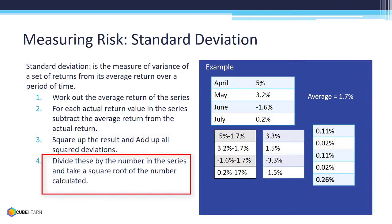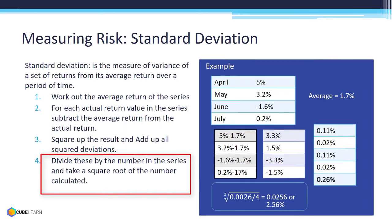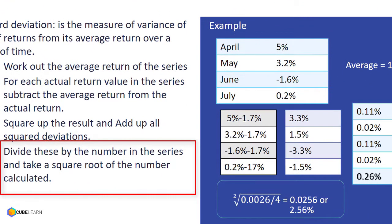Step 4: Divide these by the number in the series and take the square root of the calculated number. 0.26% is divided by 4, the number of the series, and the square root is calculated. The answer is 2.56%.